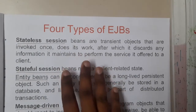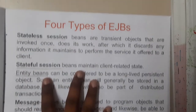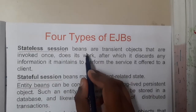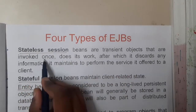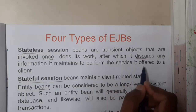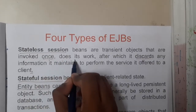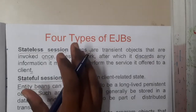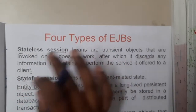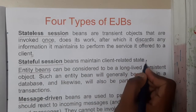There are four different types of EJBs. First, stateless session beans are transient objects invoked once to do their work, after which they discard any information — there is no record that a client came and did work, so no data is saved. Second, stateful session beans maintain client-related state, storing data about how the client moved and what they did during the session.